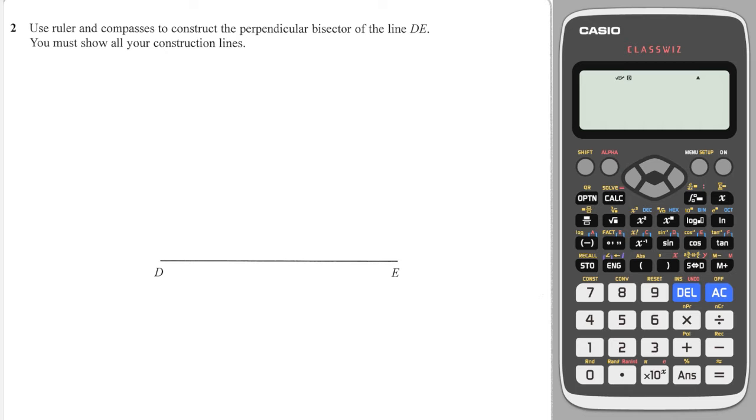Okay, so we need to use a ruler and compass, of which I have neither. To construct the perpendicular bisector of the line DE you must show all your construction lines. I will show you how one would go about doing this if they did have a ruler and compass. I definitely think this is going to be my least watched video.